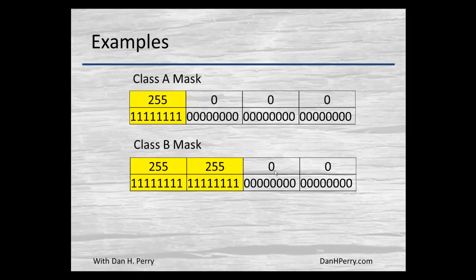Some examples: the default Class A mask is 255.0.0.0 — the first eight bits indicating the network number are ones and the remaining twenty-four are zeros. The default Class B subnet mask is 255.255.0.0 — the first 16 bits indicate the network, the last 16 bits the host.